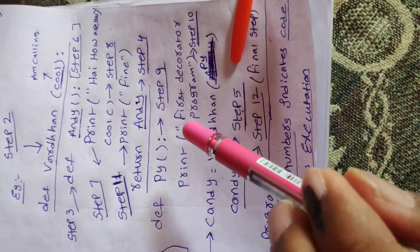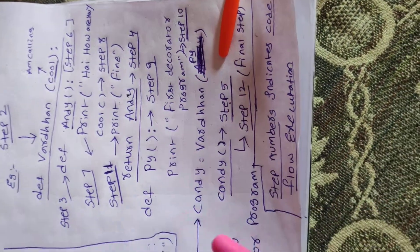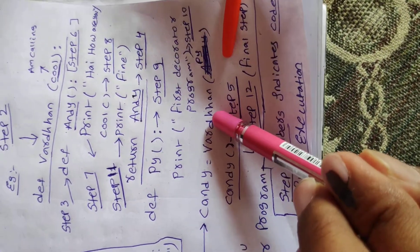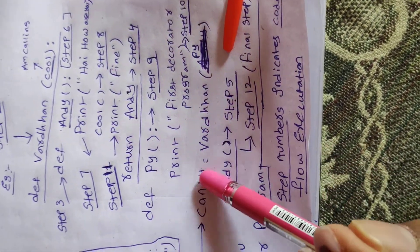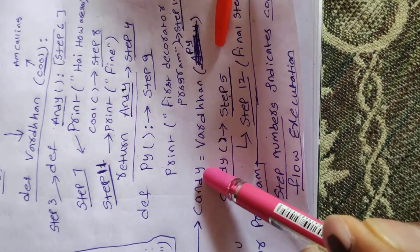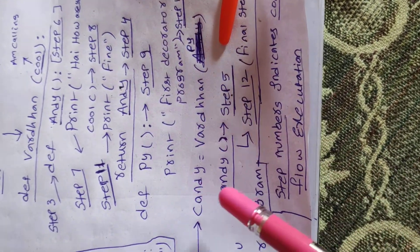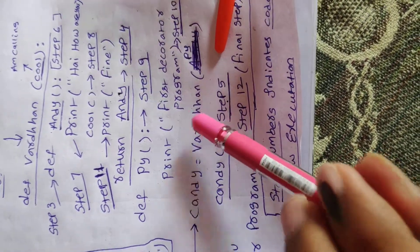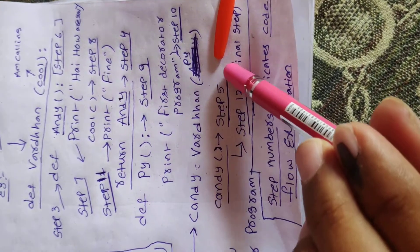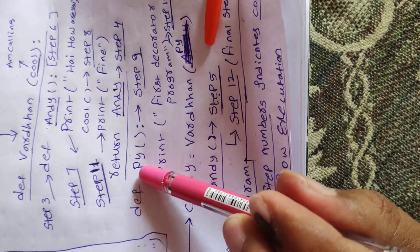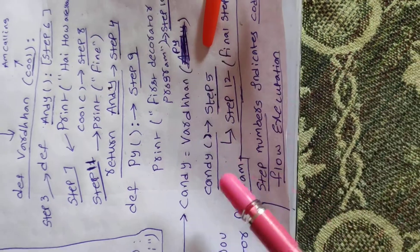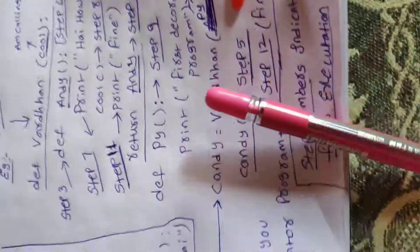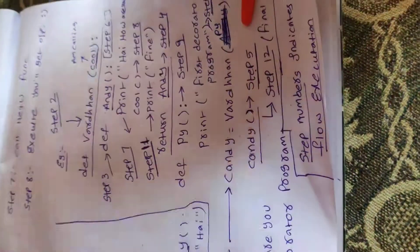Now we'll be creating one more method here called py, and inside that it will be passing the print statement 'first decorator program'. Here we had created a name called candy, and inside that I am going to call my first method name wortdan and inside that I am going to call my second method name, py. So you can see the second method name is py, and I am going to call this py name here. Now I'll be calling my candy function.